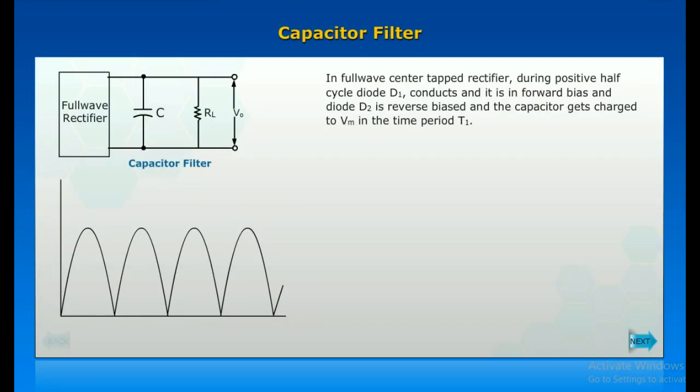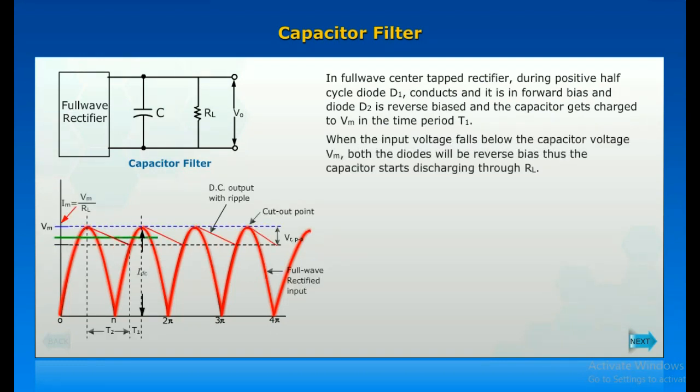Capacitor filter: In full wave center-tapped rectifier, during positive half cycle, diode D1 conducts and it is in forward bias, and diode D2 is reverse biased. The capacitor gets charged to V_m in the time period T1. When the input voltage falls below the capacitor voltage, both the diodes will be reverse biased. Thus, the capacitor starts discharging through R_L.